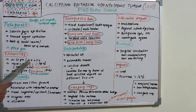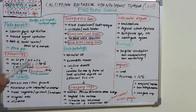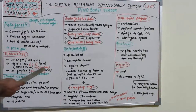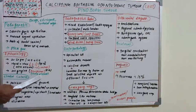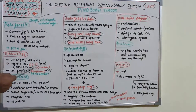Moving on to epidemiology, CEOT is most commonly seen among 20 to 60 year olds, with a mean age of 40 years. The male-to-female ratio is almost the same but with a slight male predilection at a 6:5 ratio. It represents just one percent of all odontogenic tumors, and it has basically two types: intraosseous or central type, and extraosseous or peripheral type.